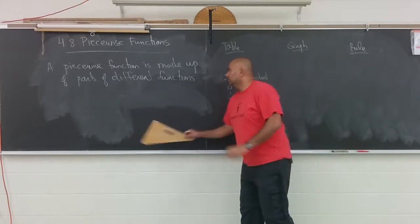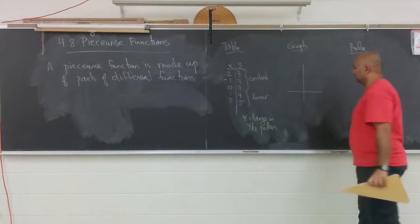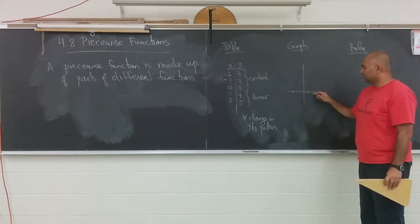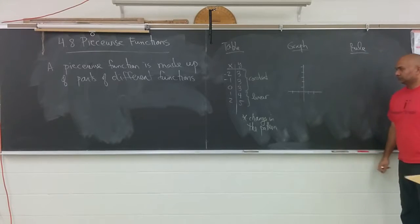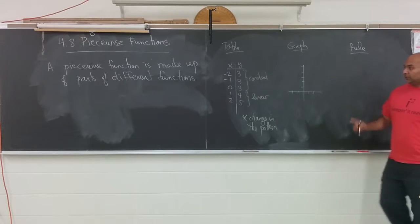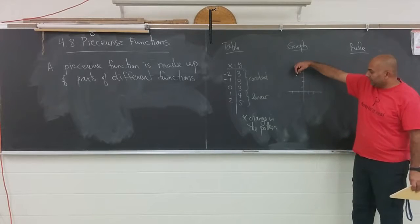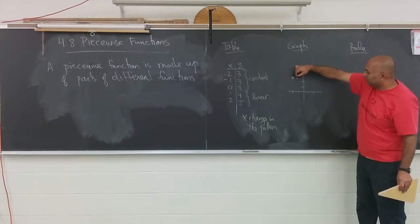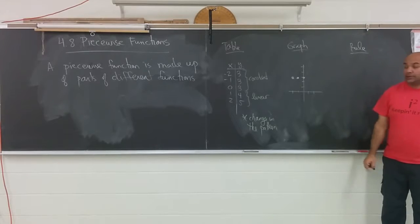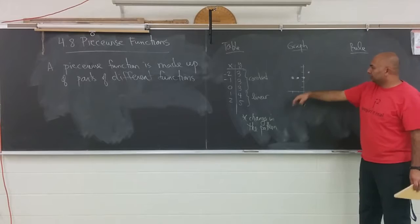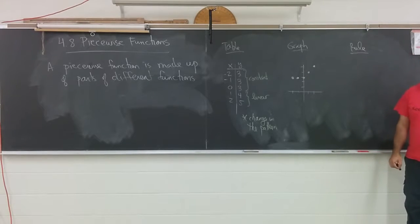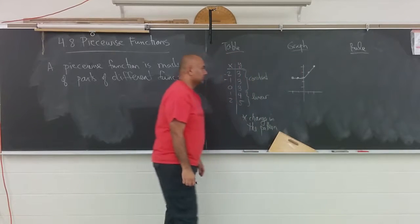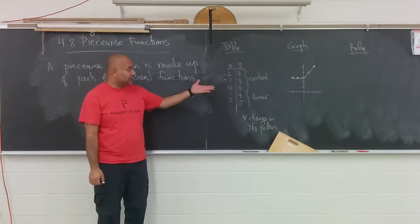Let's really focus on the graph and the rule. If I just give you an example of what this thing looks like - plotting points from the table: negative 2 and 3, negative 1 and 3, 0 and 3, then 1 and 4, and 2 and 5. What we notice for this piecewise function is that there's a flat section followed by a section going up, hence the different pieces - the different parts of the function.